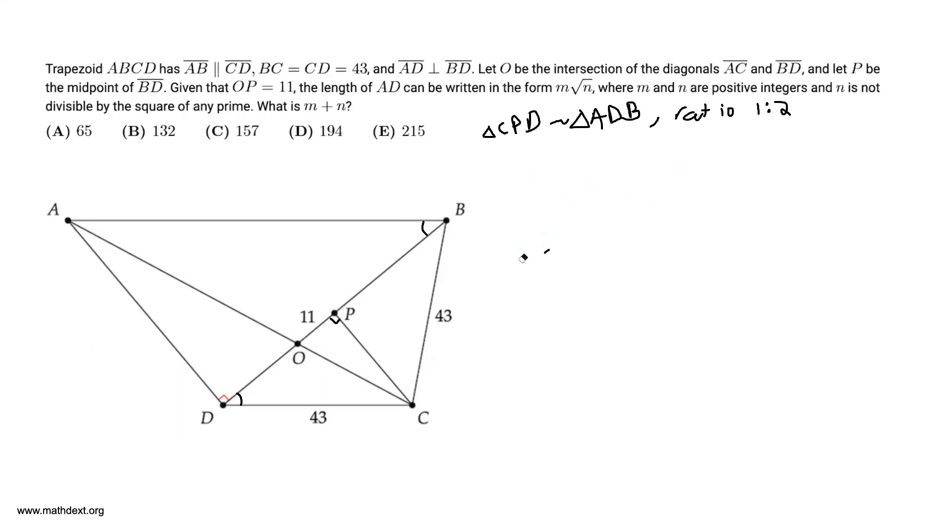So now we have one similarity involving side length AD, and we're given that this is twice the length of CP. So it would make sense to find another pair of similar triangles involving CP and AD.